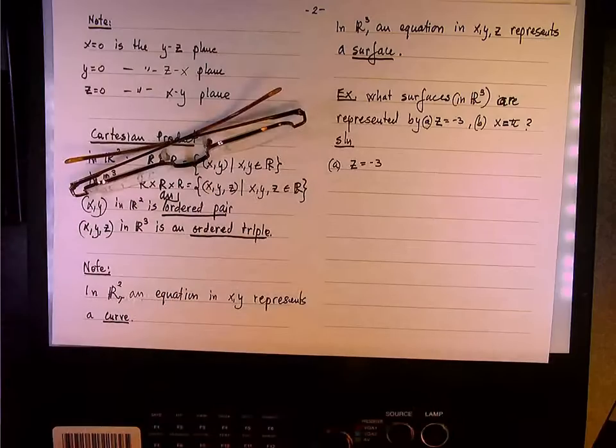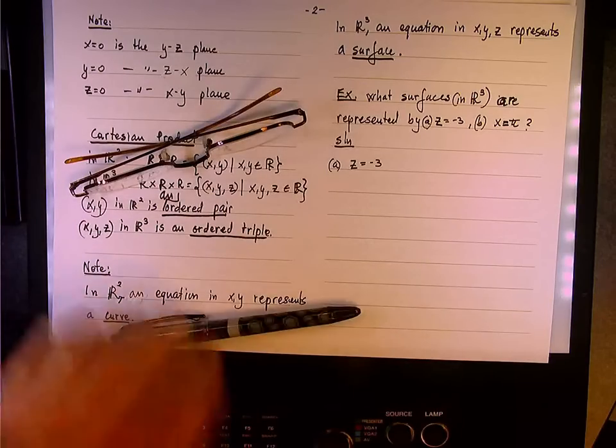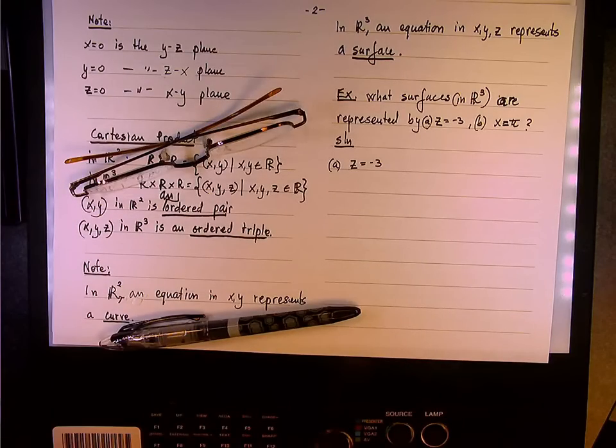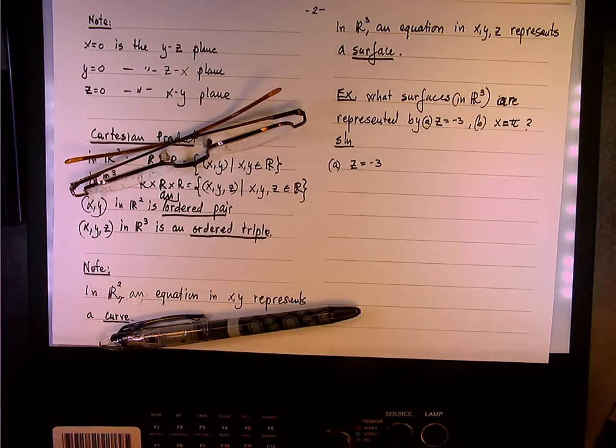Because the way we set up the coordinate system with the right-hand rule and with z going upward, when z has a fixed value, as is the case here, we are talking about, first of all, it's a plane. Because as I mentioned earlier, if you have only two variables and one fixed value of the three of the ordered triple, then you have a plane, a special case of a surface. And when this fixed value is z, then you're talking about horizontal plane.